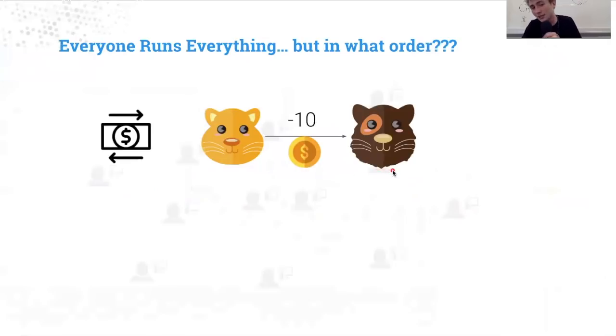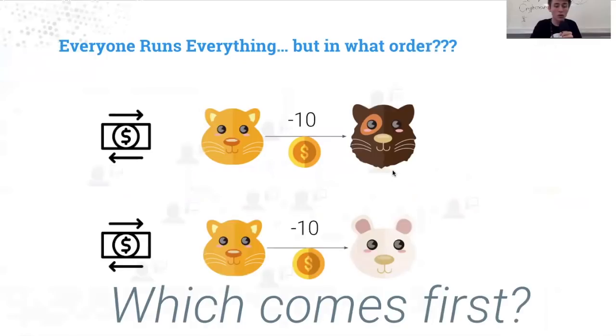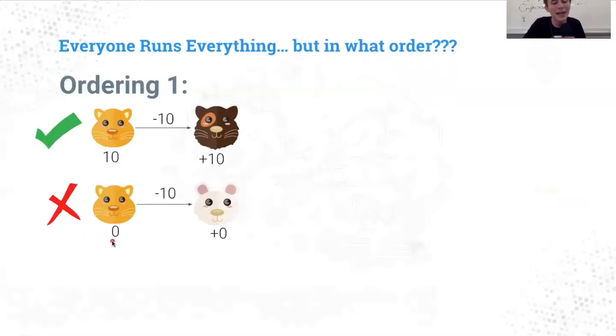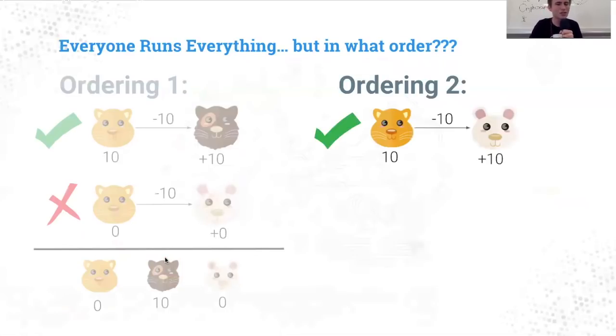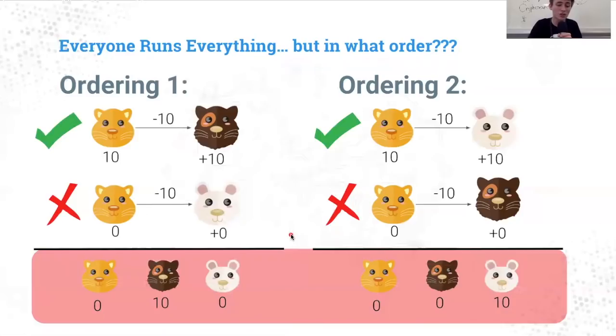Let's say we have two transactions: gold gerbil sending to the brown gerbil and then gold sending to the white gerbil. Which comes first? Which order do we put these in? This is the double spend issue. In ordering number one, the gold gerbil has 10 coins and sends it to the brown gerbil. That's fine. The gold gerbil now has zero coins and tries to send 10 to the white gerbil. But that gets rejected because the gold gerbil doesn't have enough funds. In the end, gold gerbil with zero and brown gerbil with 10.